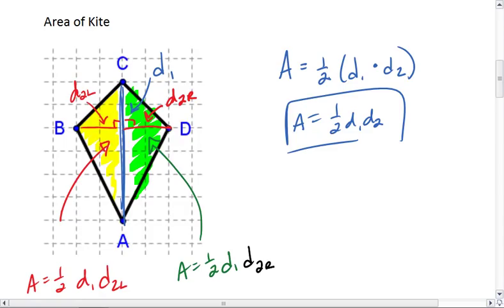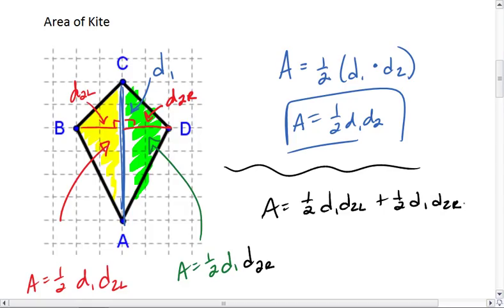The total area of this kite is the two triangles added together: 1/2 D1 D2L plus 1/2 D1 D2R. Factoring out 1/2 D1, the area is 1/2 D1 times (D2L plus D2R).